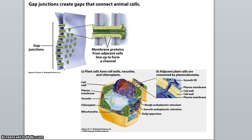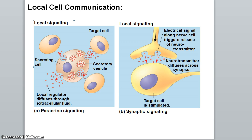For direct contact, cells can use gap junctions, or plant cells can use plasmodesmata. Gap junctions are membrane proteins that span two cell membranes, so molecules can pass directly between closely adjacent cells without leaving one cell and entering another. With plasmodesmata it's basically the same thing, but cell walls are involved, so molecules must pass through both cell membranes and cell walls to move between two plant cells.